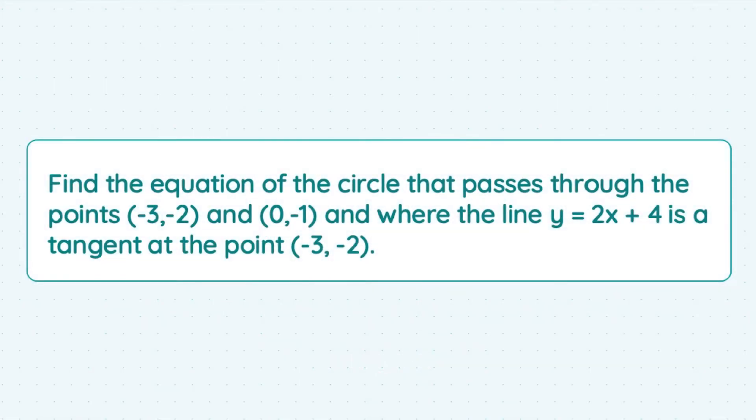Hi folks. What have we got in store? Difficult wee question ahead, but with a bit of practice, we know our things. So, find the equation of a circle that passes through two points and where a line is a tangent at one of those points. That looks a bit wordy, a bit confusing. What I like is a little sketch.